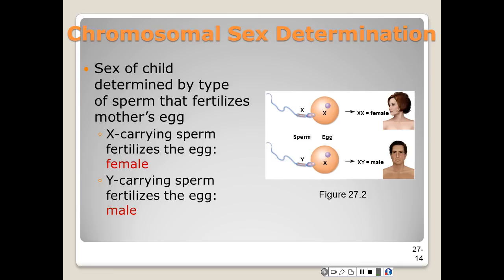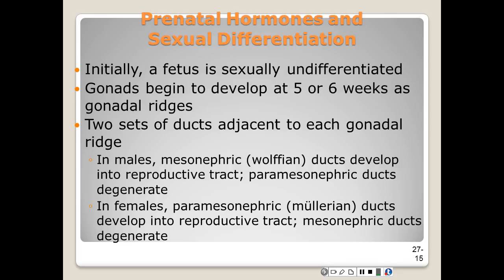The sex of a child is determined by the type of sperm that fertilizes a woman's egg. An X-carrying sperm will produce a female child and a Y-carrying sperm will produce a male child. Sex determining does not end with fertilization — it requires an interaction between the genetics and the hormones produced by the mother and of course by the fetus.